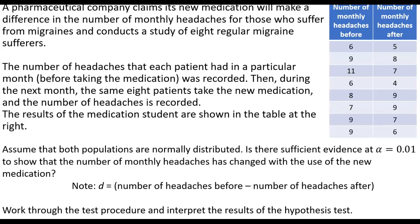The results of the medication study are shown in the table at the right. Assume that both populations are normally distributed. Is there sufficient evidence at alpha equals 0.01 to show that the number of monthly headaches has changed with the use of the new medication? So we are looking at a difference.